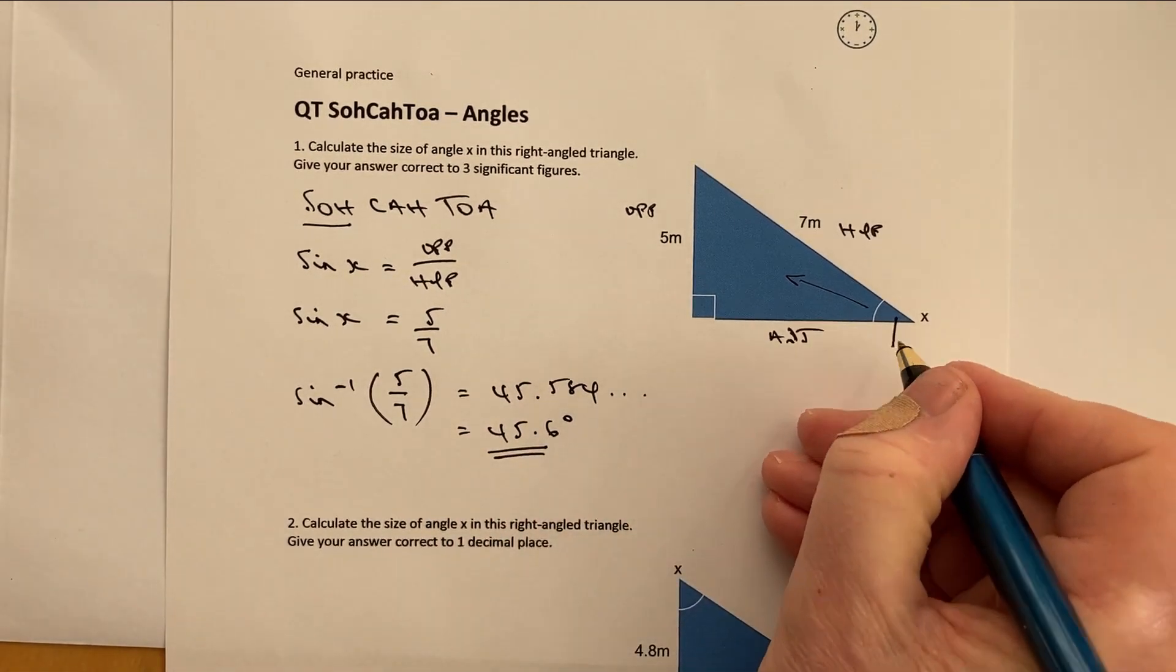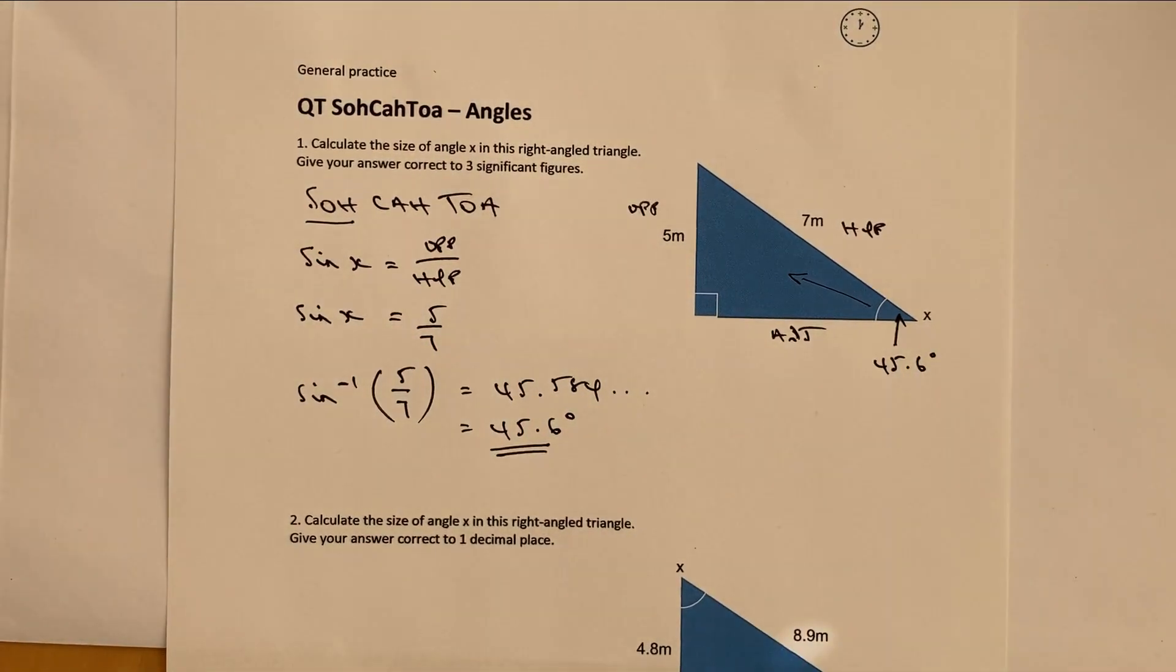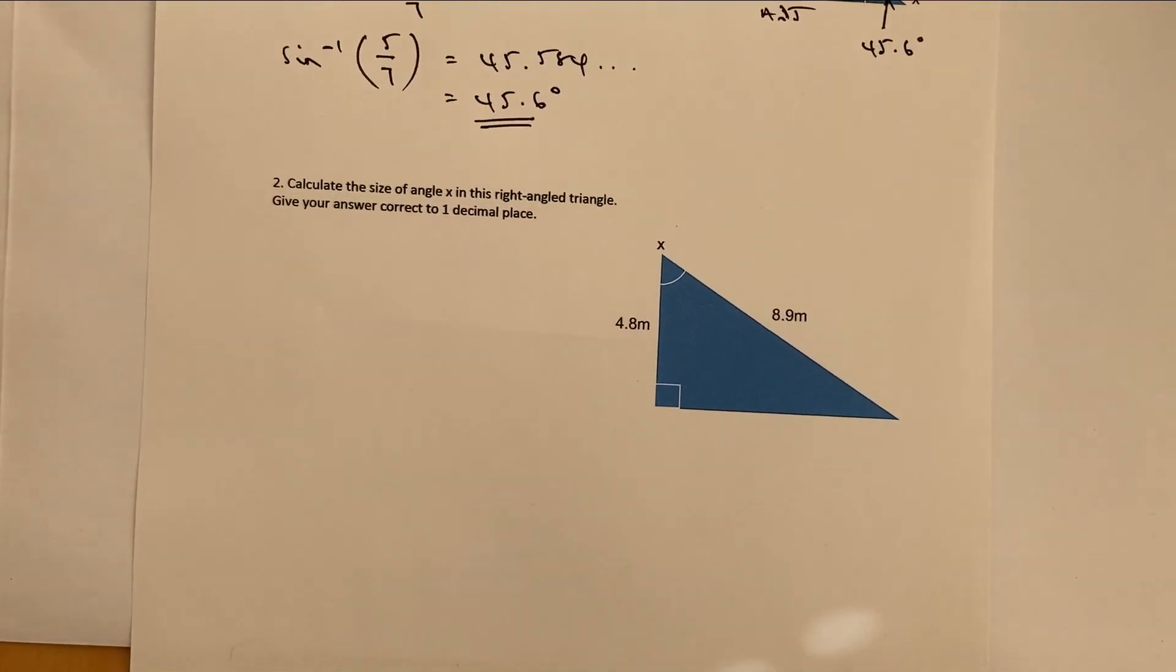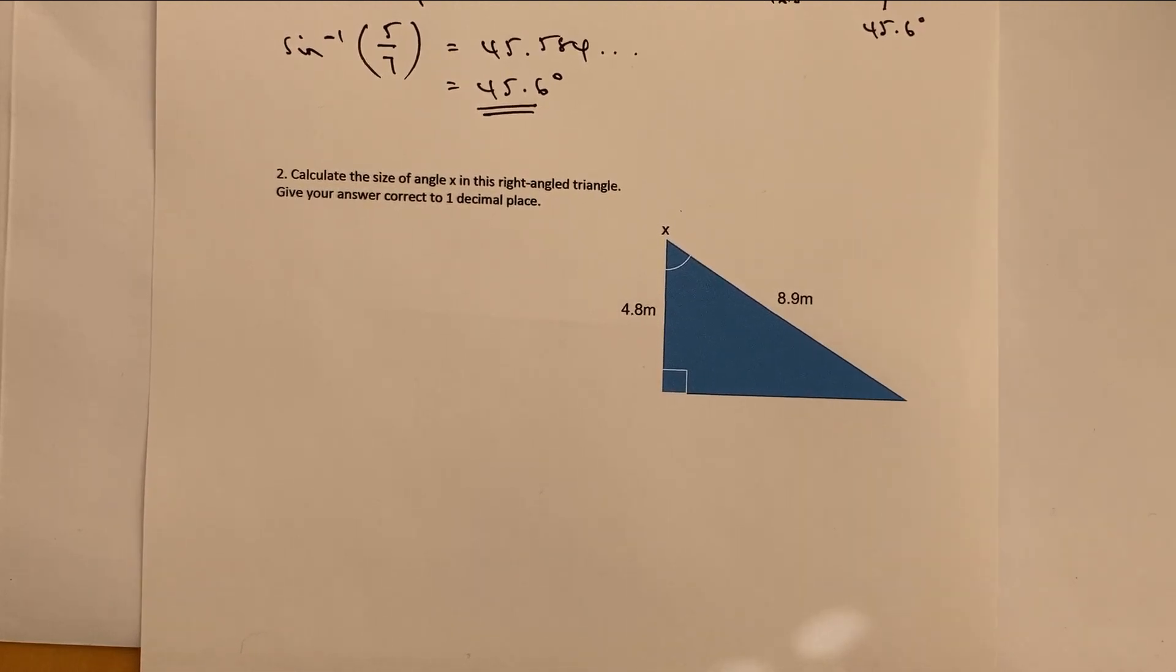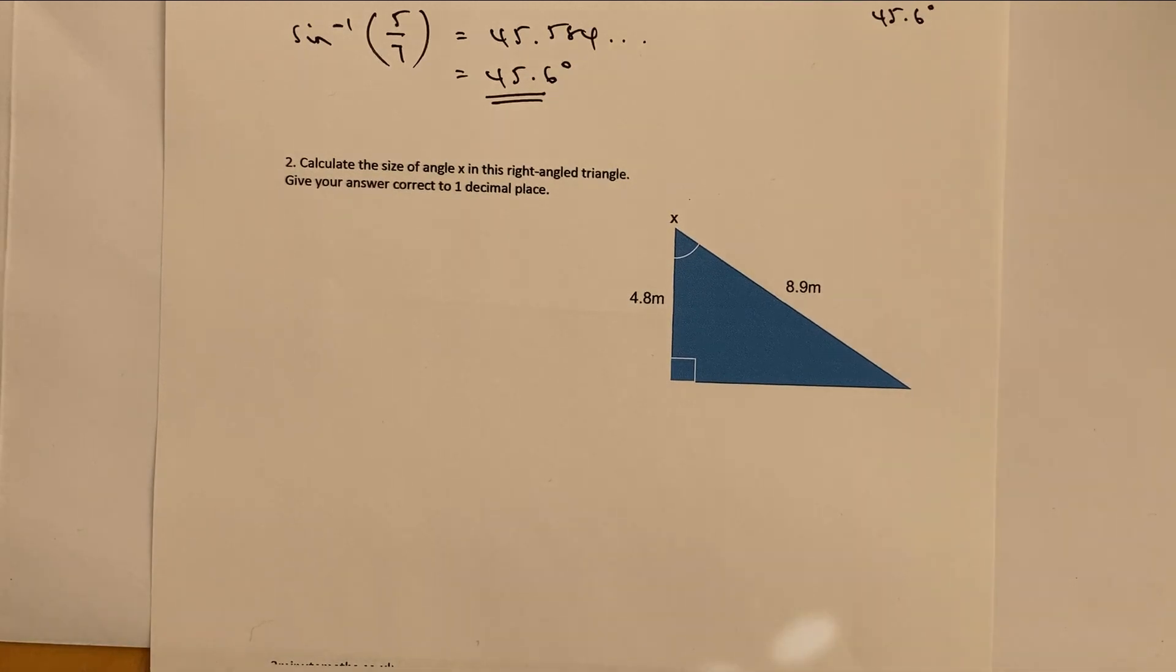In other words, the angle here is going to be 45.6 degrees. I appreciate this is three-minute maths, and we've just used three minutes, but just for the interest of this, I'm going to go on and give you another example in part two. And again, I will mention, if you go through to the website by clicking the link below, you'll be able to download this and have a go at this for yourself.